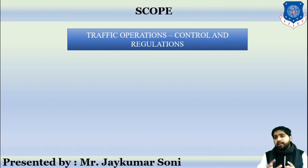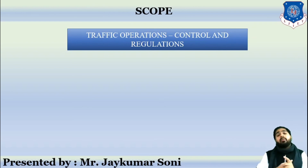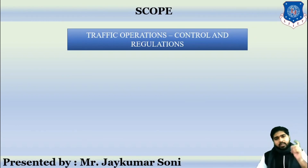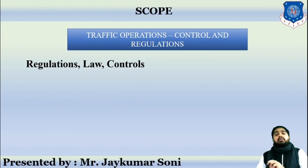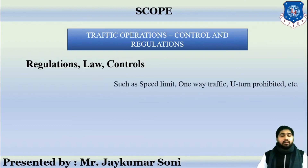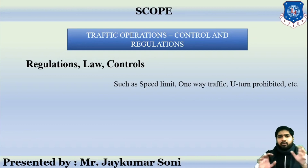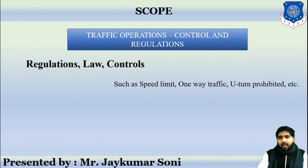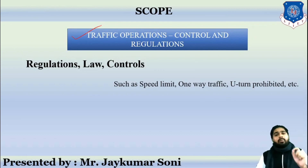G stands for Geometric Design, which has already been covered in transportation engineering — including sight distance, cross-sectional elements, super elevation, and widening of pavement. O stands for Traffic Operation Control and Regulation, which deals with various regulations, rules, laws, and control measures such as speed limits, overtaking prohibitions, one-way traffic, and U-turn restrictions — the kinds of signs you see while travelling on roads.